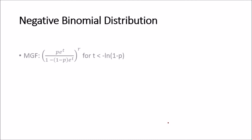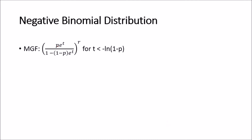Some final remarks on the negative binomial distribution: its moment generating function is given by (P·e^t / (1 − (1−P)·e^t))^R. This is essentially the MGF of a geometric distribution raised to the power of R, reflecting the fact that we are summing R independent geometric distributions. The MGF has the same validity condition as the geometric MGF: t must be less than −ln(1−P). If you don't recall how this result was derived for the geometric distribution, I recommend checking out the video I will link covering the geometric distribution's MGF derivation.